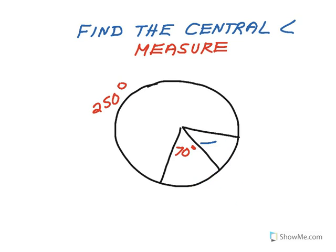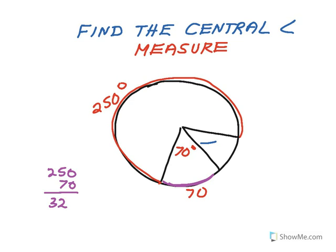In this next example, I want to find the central angle where the blue blank is. I see a 250-degree arc and a 70-degree central angle. The 70-degree central angle goes with a 70-degree arc. Adding 250 plus 70 gives 320 degrees. So the remaining arc is 360 minus 320, which is 40 degrees. That means the unknown central angle is 40 degrees.